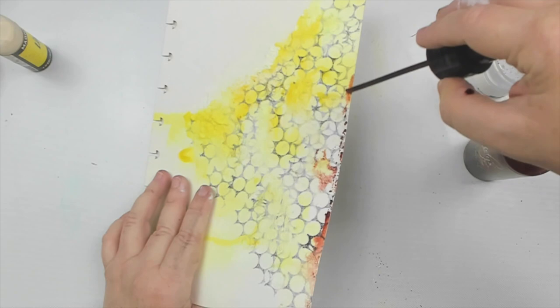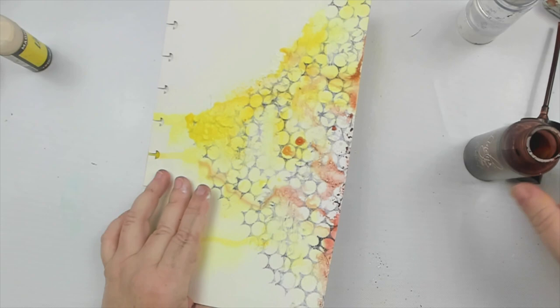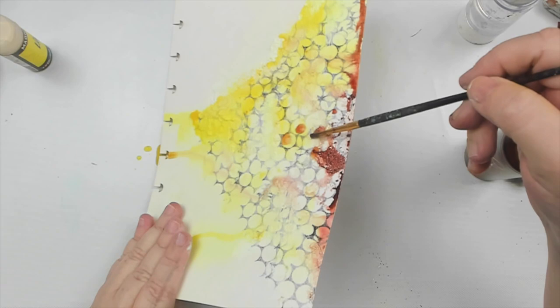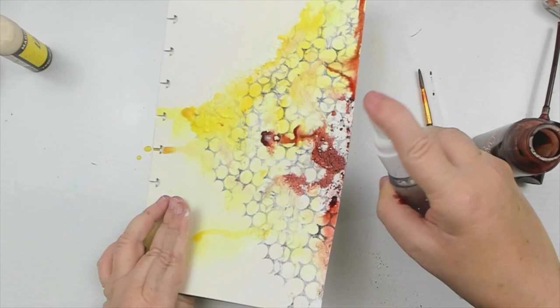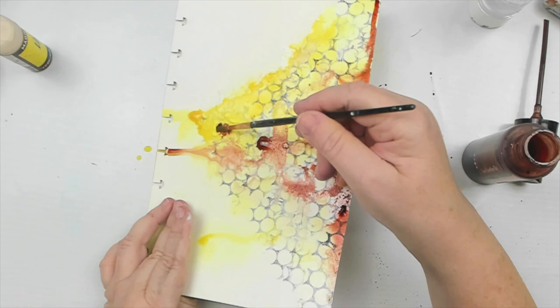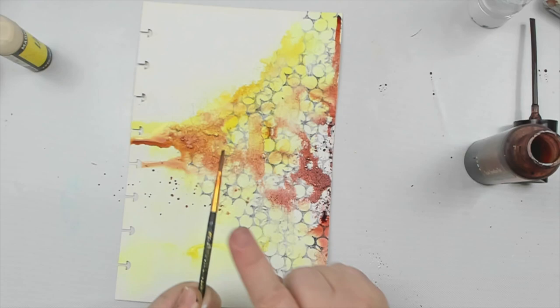You want to make sure that you water it down and let it drip down the page. That really creates a good effect in the background. As you can see, I'm still staying within the design, trying to leave the white space everywhere else. I didn't add a lot of red, but I did decide to add a few red splatters in the background to just tie it all in together.